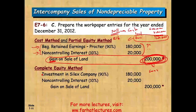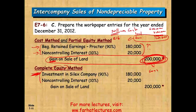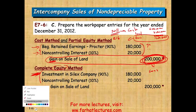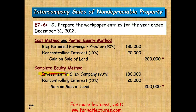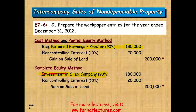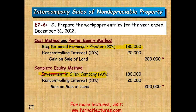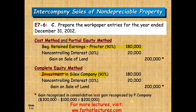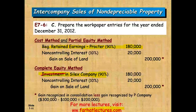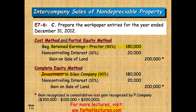If using the complete equity method, the only difference is that instead of beginning retained earnings, everything goes to the investment account. The key distinction between the two methods is whether you debit beginning retained earnings or the investment account. If this were a downstream sale, the whole amount would go to beginning retained earnings with no NCI. If you have any questions, email me or see me in class. Visit my website for additional lectures, consider making a donation, and if you're studying for the CPA exam — study hard, it's worth it. Good luck.